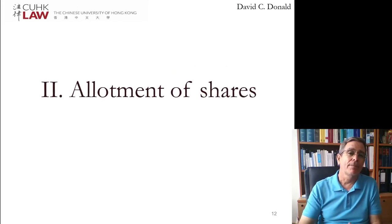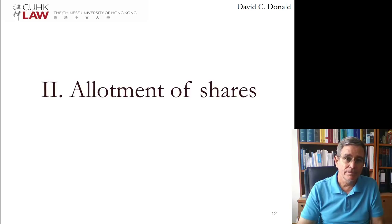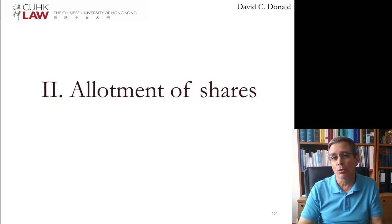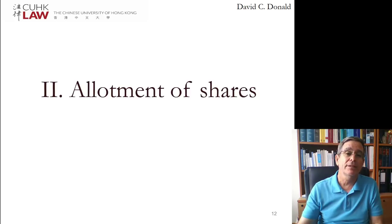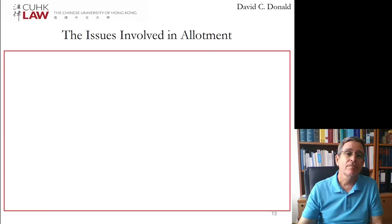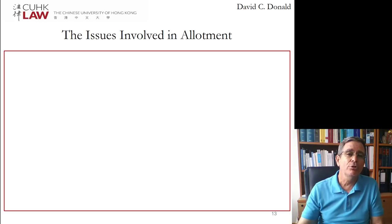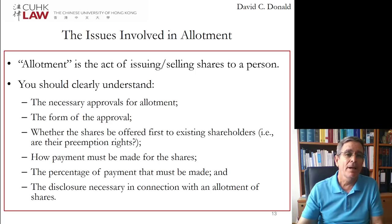When shares are given out, that's called allotment. The shares are allotted to persons who then become shareholders, and the shareholders will register their name with the company secretary in the register of members. At that point, they become members of the company with all the rights that that entails. Allotment is the act of issuing and selling shares.